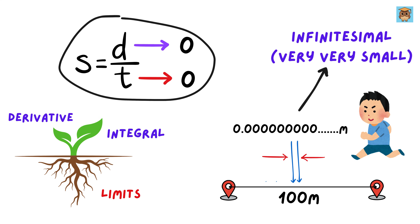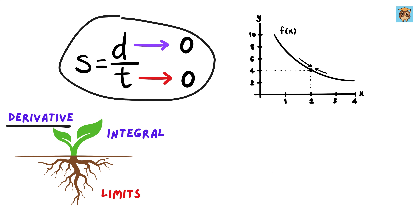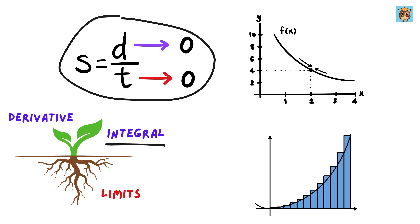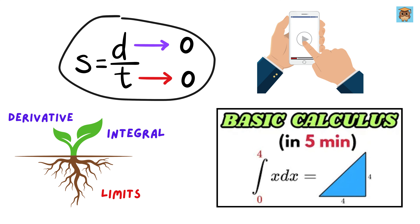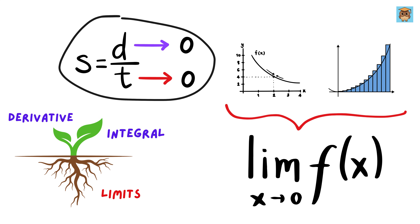This concept is the foundation of calculus. It helps us understand change in motion, growth, decay — essentially anything that happens moment by moment. In my previous videos on derivatives and integrals, I explained how a derivative tells us how fast something is changing at a specific moment, while an integral helps us calculate the total accumulation of something, like area under a curve. Both of these concepts rely on limits.